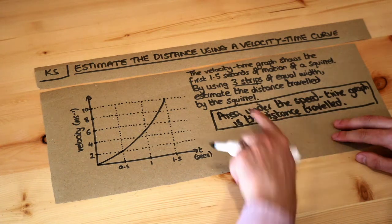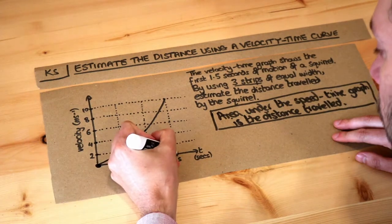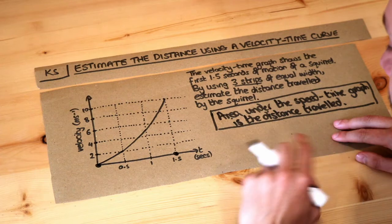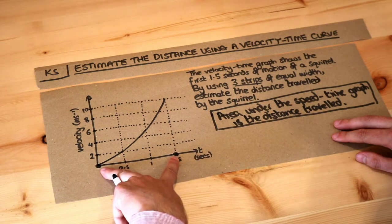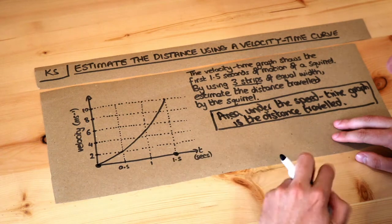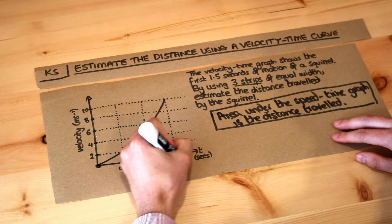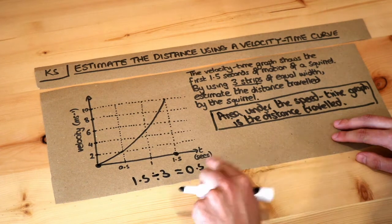Now we're told that for the first 1.5 seconds of motion, so between the 0 second mark and the 1.5 second mark, it wants us to split it into three strips. Now 1.5, this gap here of 1.5, if you split it into 3, 1.5 divided by 3 is equal to 0.5. So each strip that we're going to draw is going to have a width of 0.5.